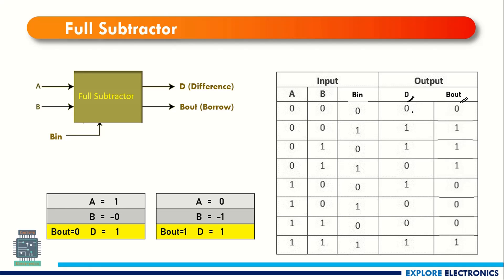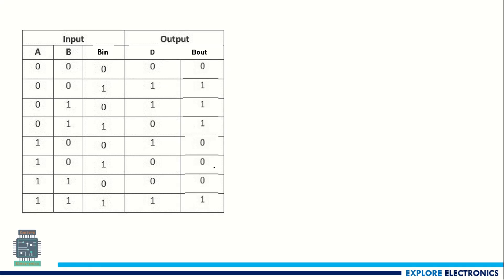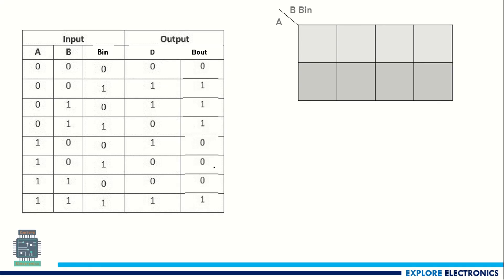For 0,0,0: difference is 0 and borrow out is 0. For 0,0,1: 0 minus 0 gives 0, then 0 minus 1 means difference is 1 and borrow out is 1. Similarly, for all the other input combinations we get the outputs D and B_out by applying the same subtraction rule used for the half subtractor.